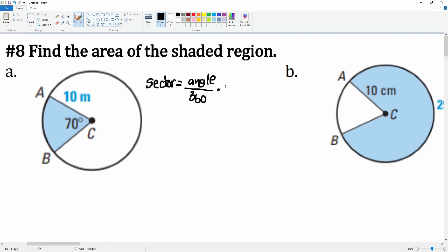So let's label it. We have the r here which is 10 meters, so r equals 10. And we have the angle here which is 70 degrees.